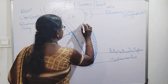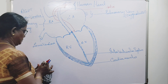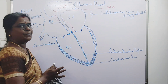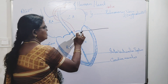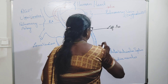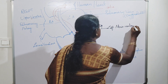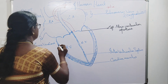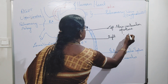Here, this is called an aperture. Aperture means a small opening. It is present in between the atrium and ventricle. On the left side, this is the left atrioventricular aperture. Aperture means a small hole. On the right side, this is known as the right atrioventricular aperture.